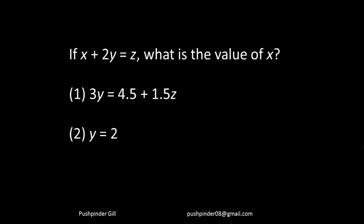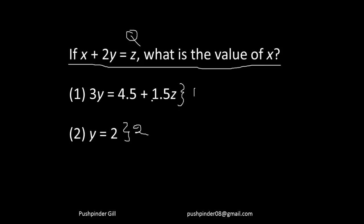This over here is your question. And this over here is your statement 1 and this over here is your statement 2. Cutting it short, you're supposed to tell the author which of the statements is able to tell me the value of x. Is it the first statement alone? Is it the second statement alone? Or do I have to combine both the statements to give the answer? This is the premise of it.